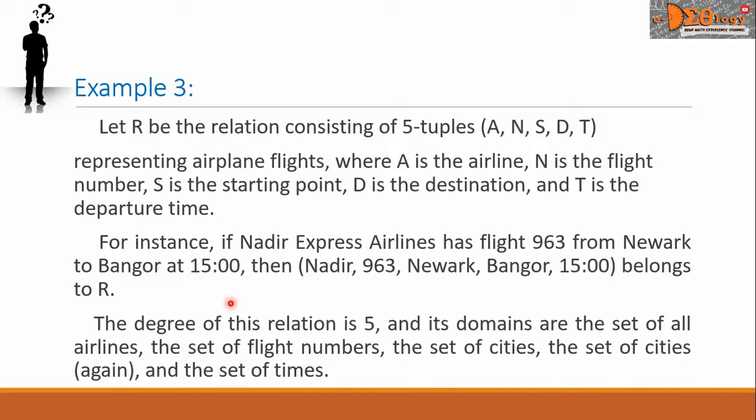The degree of this relation is 5, and its domains are the set of all airlines, the set of flight numbers, the set of cities, the set of cities again, and the set of times.